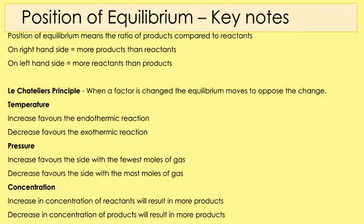Pause the video and copy down these key notes. The position of equilibrium means the ratio of products compared to reactants — on the right we get more products, on the left more reactants. Le Chatelier's principle: when a factor is changed, the equilibrium moves to oppose the change. Increasing temperature favours the endothermic reaction; decreasing temperature favours the exothermic reaction. Increasing pressure favours the side with the fewest moles of gas; decreasing pressure favours the side with the most moles of gas. For concentration — which applies to reactions in solution — increasing the concentration of reactants gives more products; decreasing the concentration of products also gives more products.